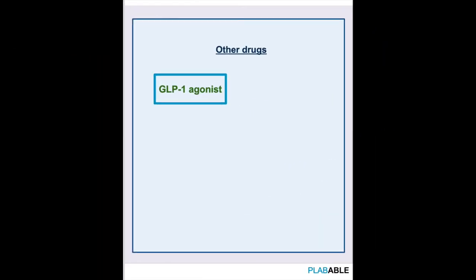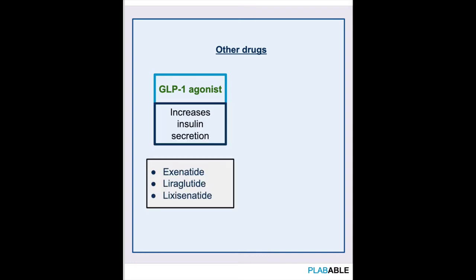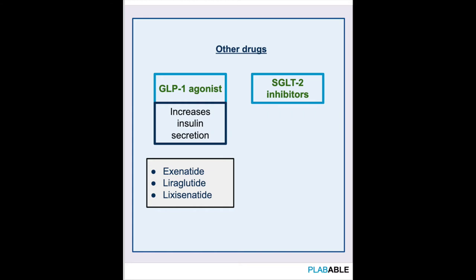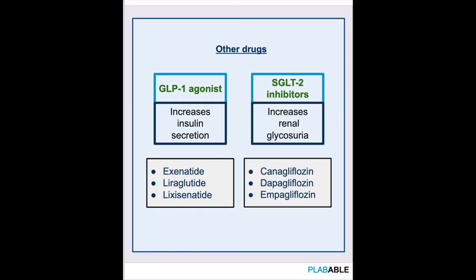We have a few more classes of drugs. The first is GLP-1 agonists, which increase insulin secretion and include drugs like exenatide or liraglutide. The other class is SGLT-2 inhibitors, which work by causing the kidneys to excrete glucose into urine, thus reducing the amount of glucose in the body. Drugs in this class include canagliflozin, dapagliflozin, and empagliflozin. These can be used as the initial treatment if metformin is contraindicated, or in combination for dual or triple therapy.